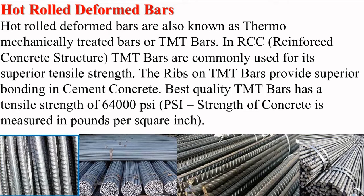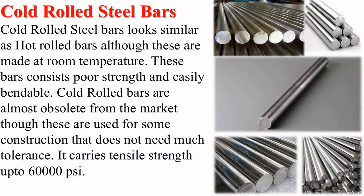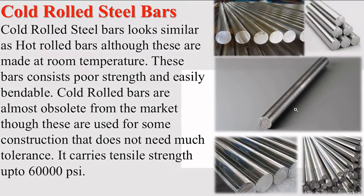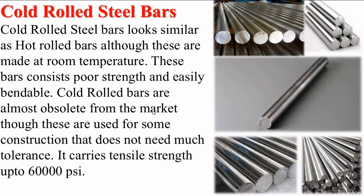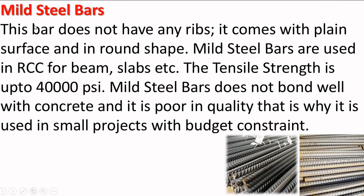Next is cold rolled steel bars. Cold rolled steel bars look similar to hot rolled bars, although these are made at room temperature. These bars consist of poor strength and are easily bendable. Cold rolled bars are almost obsolete from the market, though they are used for some construction that does not need much tolerance. They carry tensile strength up to 60,000 psi.